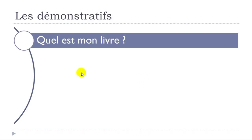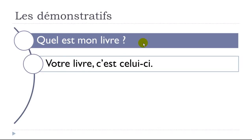Example: if you ask 'Quel est mon livre?' — which one is my book? — the answer could be 'Votre livre, c'est celui-ci' — your book, it's this one. Normally when you say that, you indicate with your finger pointing to the book: 'Votre livre, c'est celui-ci.'